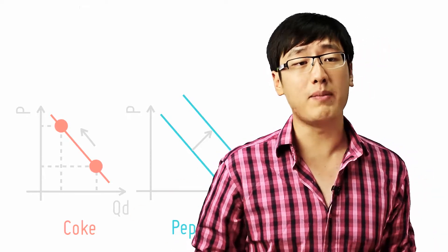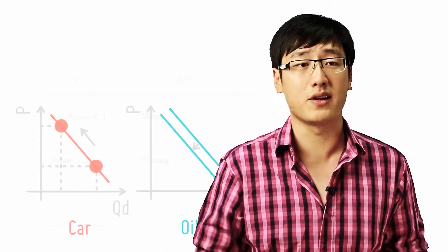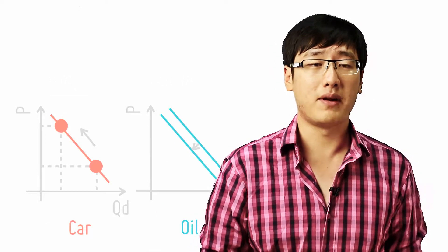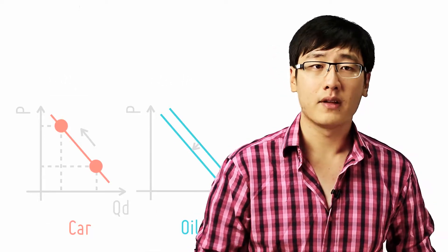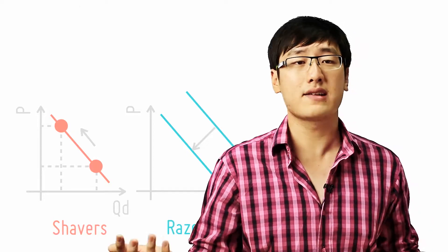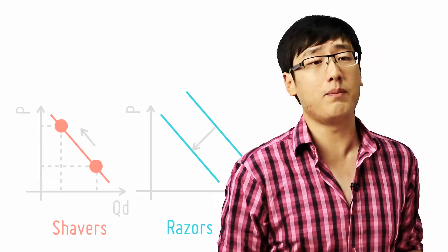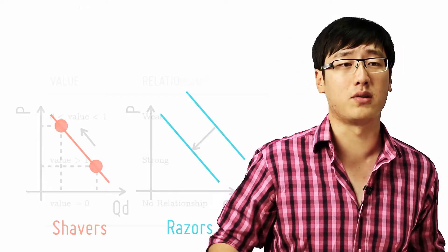In the case of complements, the same thing applies. Weak complements like oil and car, because you won't just buy a car because of a drop in the price of oil, but there's still a certain amount of influence. So strong complements are like razors and shavers. Try and think of your own examples. It's always good to have one example each for weak complements, strong complements, weak substitutes, and strong substitutes.